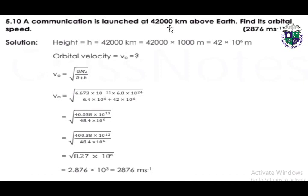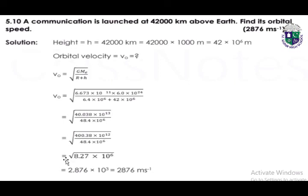Question 5.10: a communication satellite is launched at 42,000 kilometers above the earth; find its orbital speed. Converting height: h = 42 × 10⁶ meters. Using the same orbital velocity formula as in 5.9, we substitute the values of G, Me, R, and h. First calculating the powers of ten, then dividing, we get 8.27 × 10⁶. Taking the square root gives 2.876 × 10³, so the orbital speed is 2876 m/s. This is all for today, thank you, Allah Hafiz.